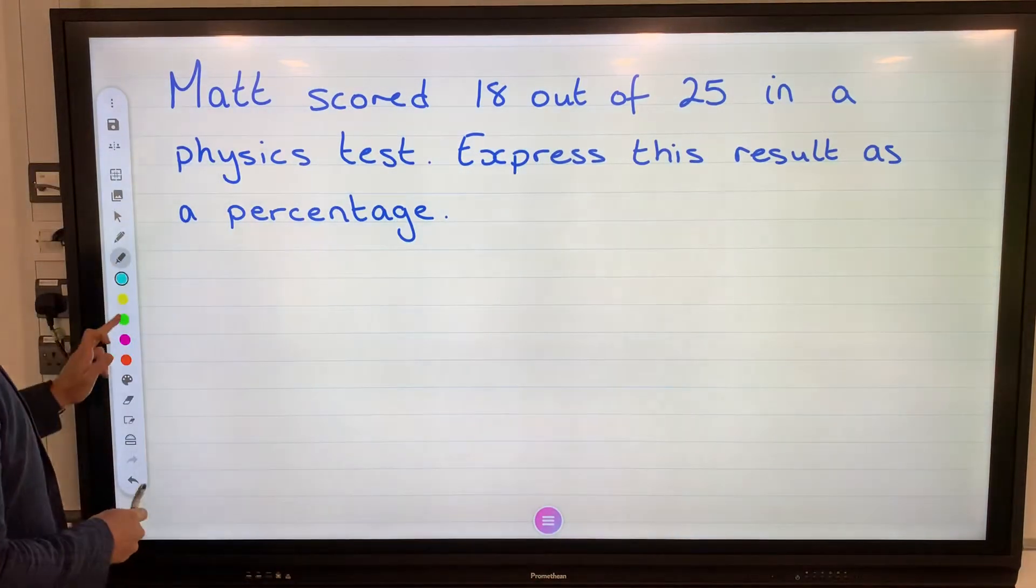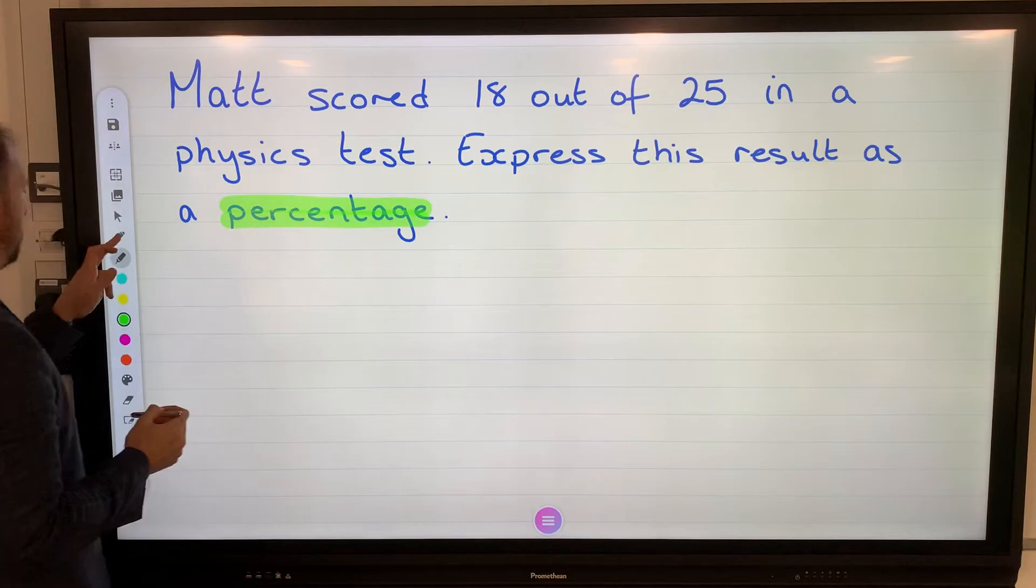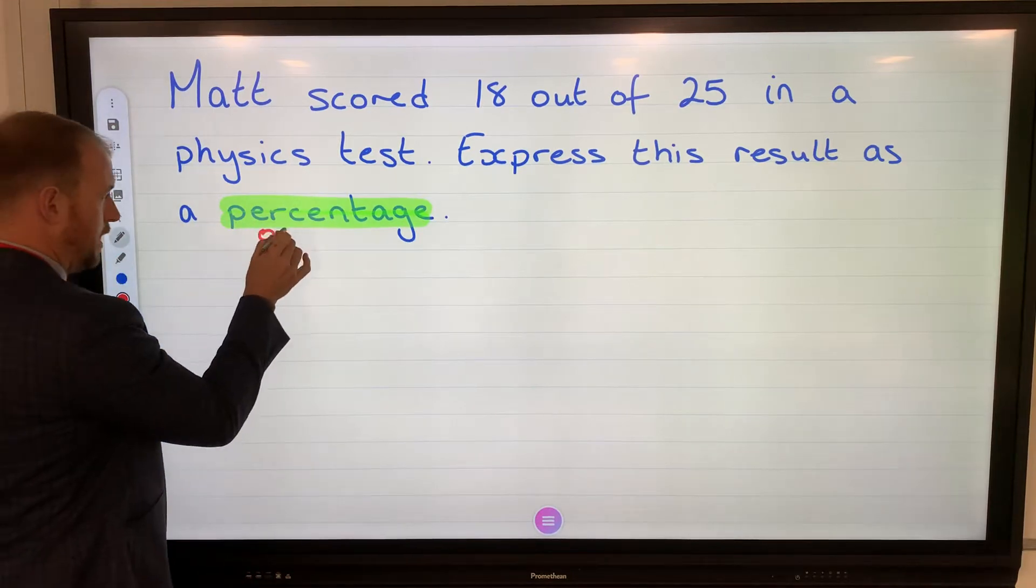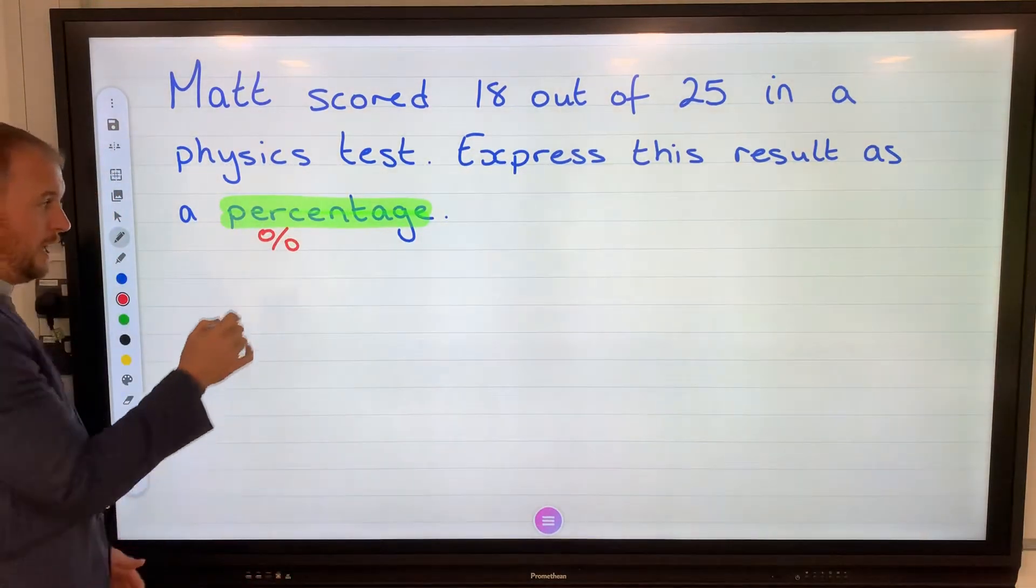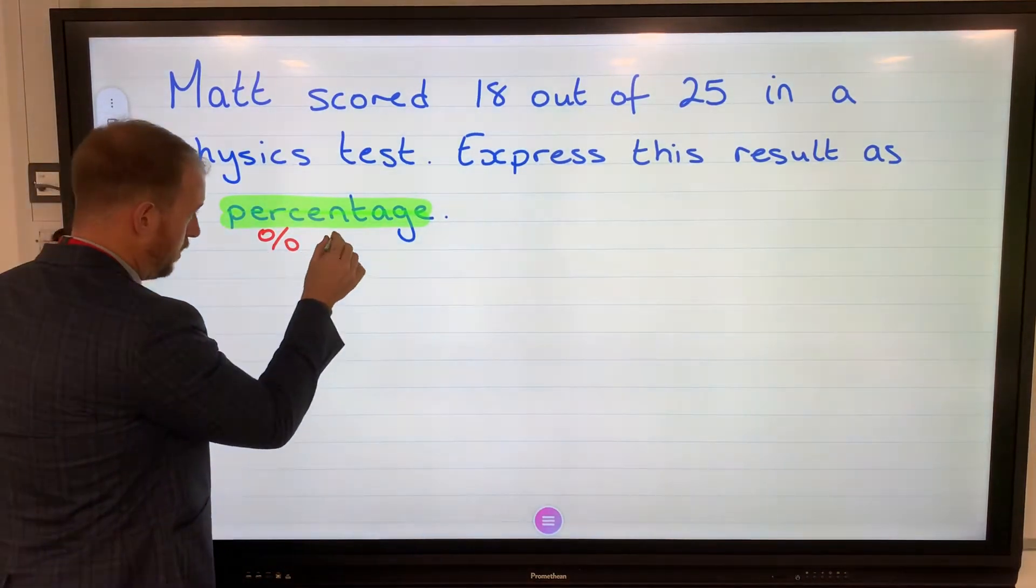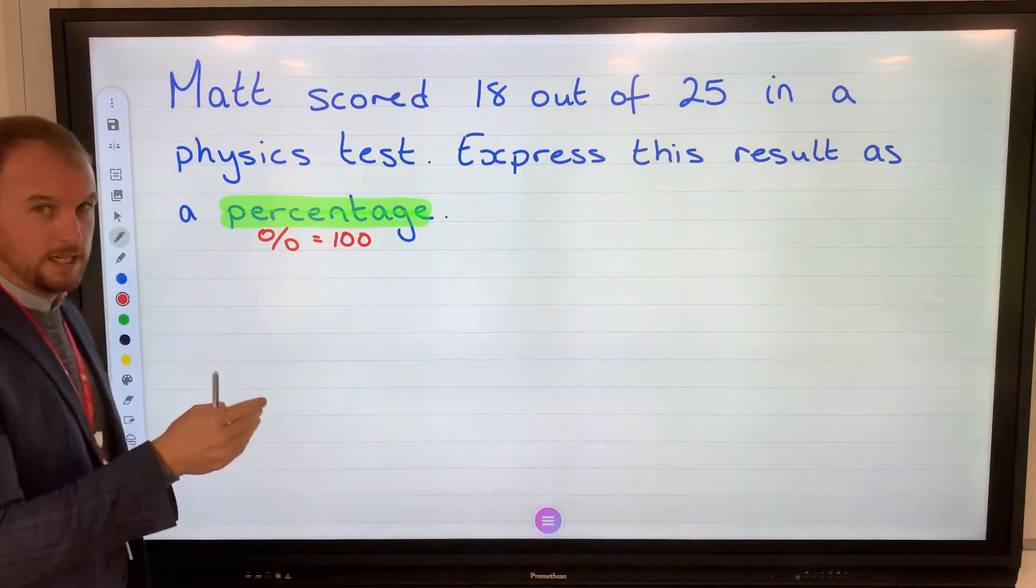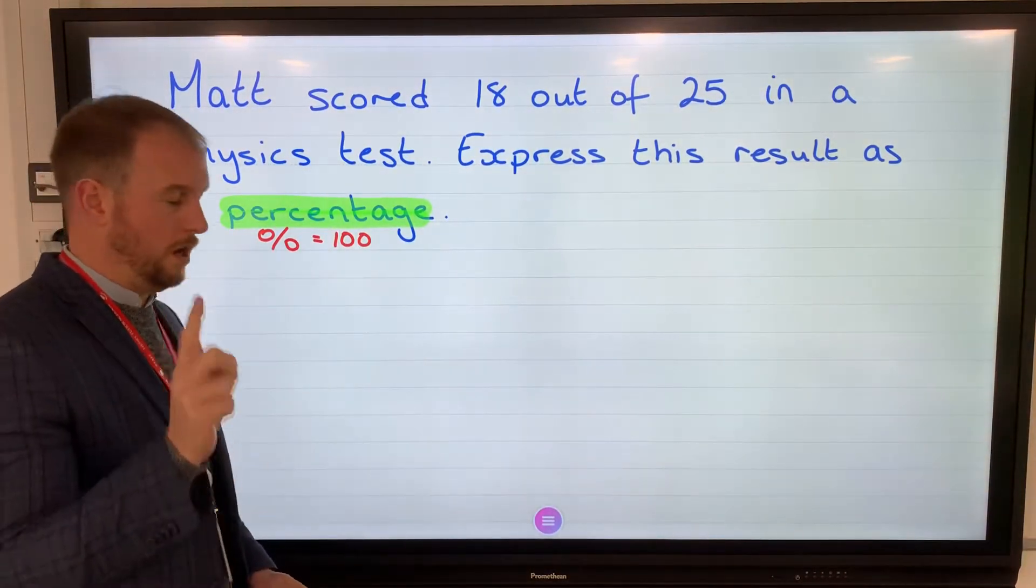Now let's look at that keyword there, percentage. We know a percentage is out of 100. The percentage symbol is literally the number 100. There's the one and we've got two zeros. So percentage is out of 100.